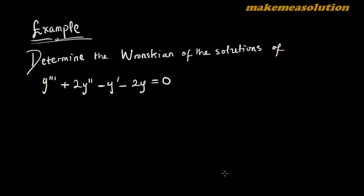Hello guys and welcome to this new example on Wronskian. We want to determine the Wronskian of the solutions of the differential equation y''' + 2y'' - y' - 2y = 0. This is a two-in-one problem: we are solving a third-order homogeneous differential equation and at the same time determining the Wronskian of the solutions. Let's dive in immediately.